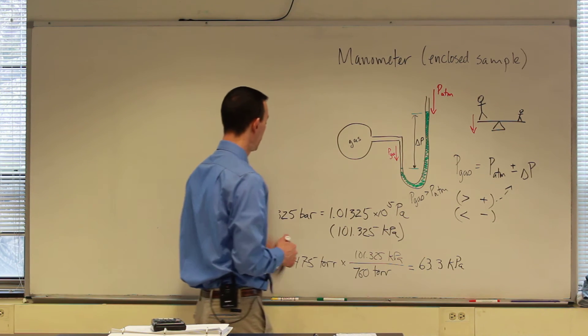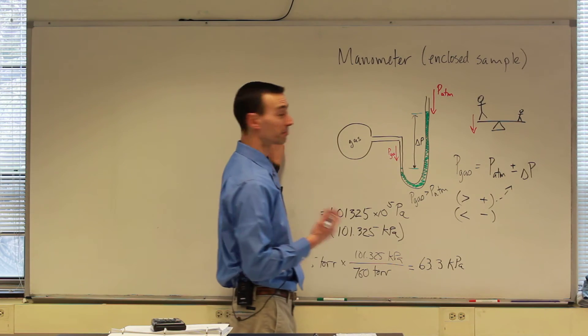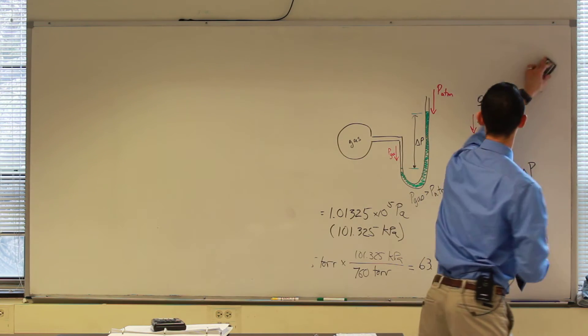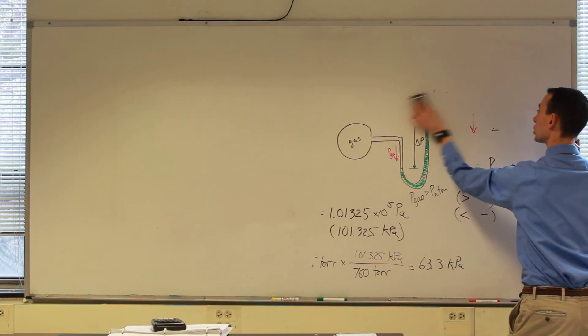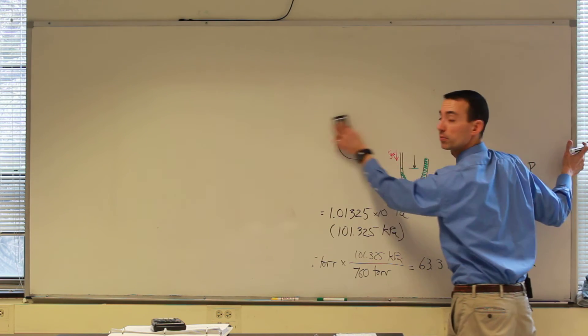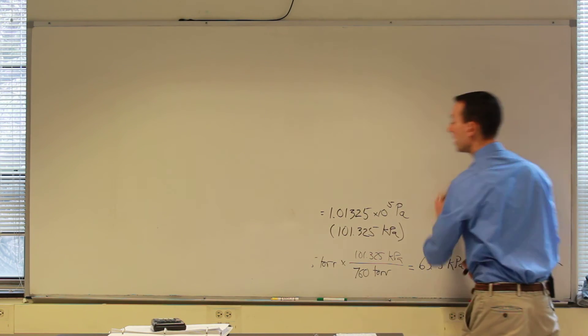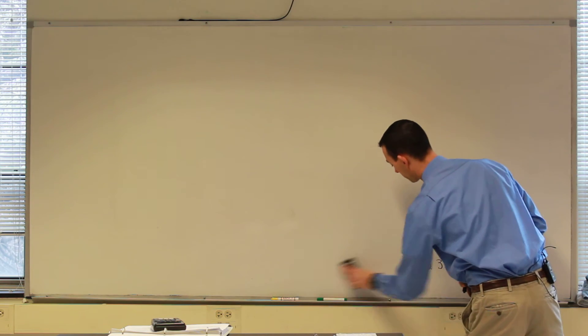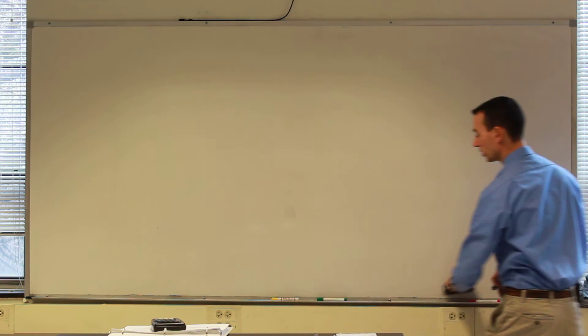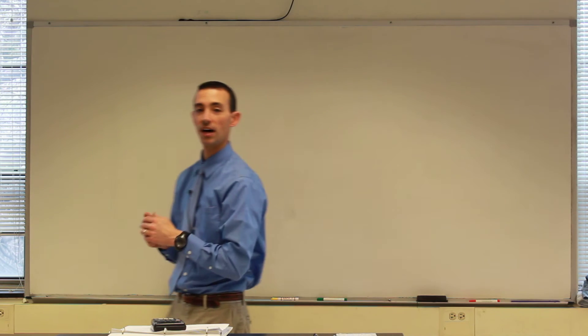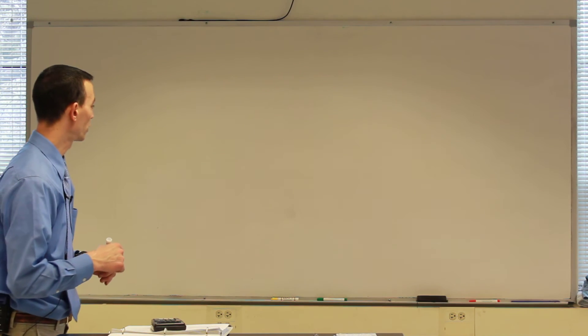In the lab, we nowadays don't like to have as much mercury hanging around, so we have an electronic digital barometer that has been calibrated against an authentic mercury barometer. And in terms of manometers, we might use water in place of the mercury if we could.